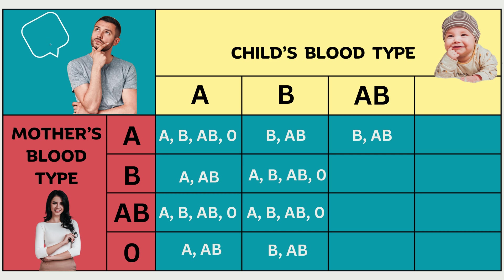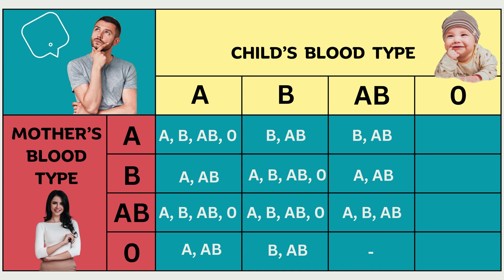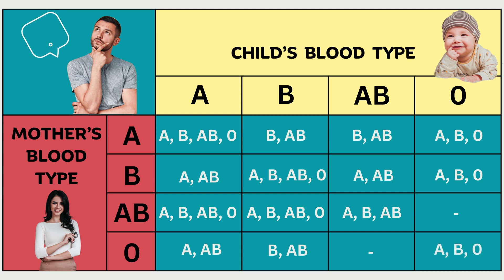For a child that has blood type AB and a mother whose blood type is B, the father could only have A or AB blood type. If both the mother and the child are blood type AB, the father could be A, B, or AB blood types. A scenario where the child is blood type AB and the mother is blood type O is impossible. For a child with blood type O and a mother with blood type A, the father's blood group could be A, B, or O. The same applies if the child has blood type O and the mother has blood type B — the father could still be A, B, or O. A scenario in which the child's blood type is O and the mother's is AB is not possible. If both the mother and the child have blood type O, then the father could be A, B, or O blood type.